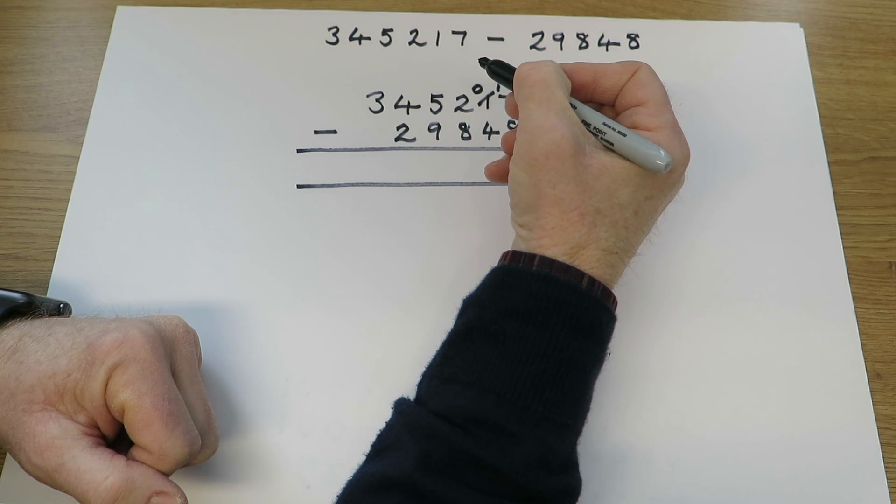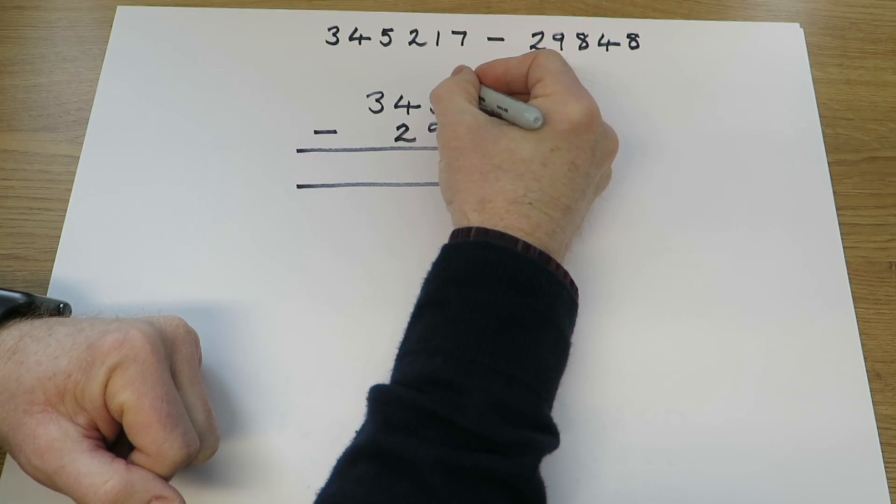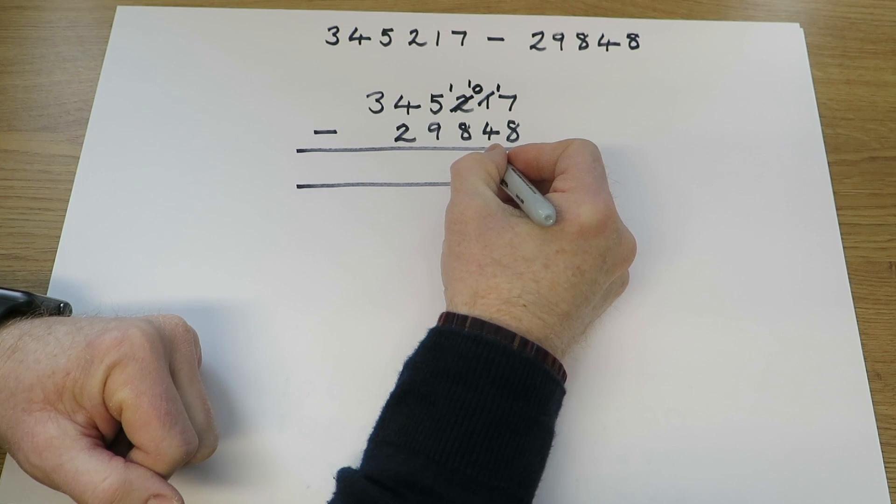We've got no tens. To subtract 4 tens, we'll have to use one of the hundreds. 10 take away 4 is 6 tens.